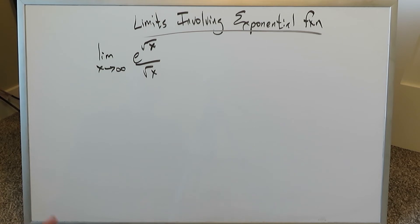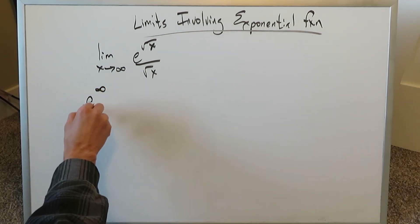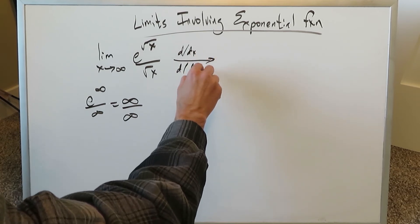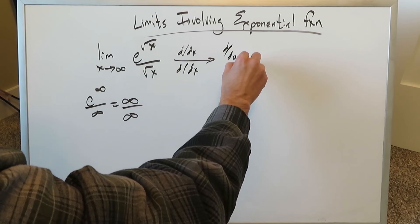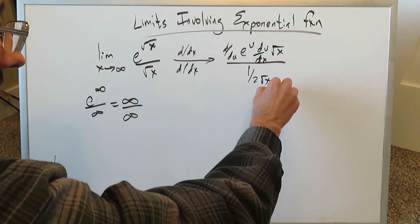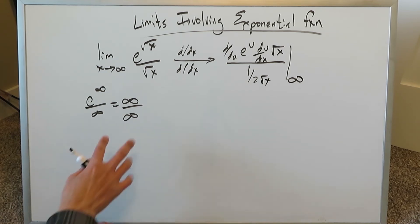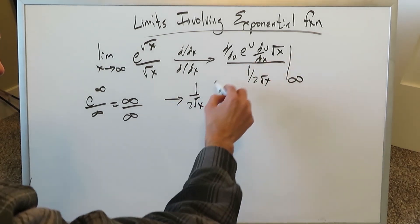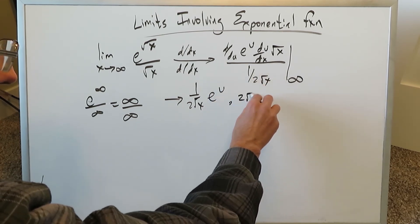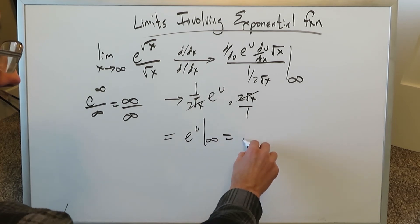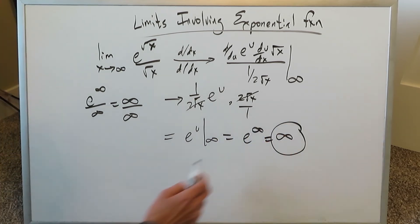Let's look at this question: limit as x approaches infinity of e to the root x divided by root x. Plugging in infinity gives e to the infinity over infinity — an indeterminate form. Applying L'Hôpital's rule: derivative of e to the u times du/dx for root x, divided by derivative of root x which is 1 over 2 root x. The 1 over 2 root x terms cancel, leaving e to the u. Plugging in infinity gives e to the infinity, so the answer is infinity.